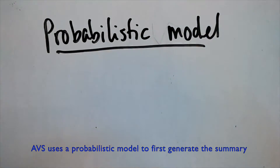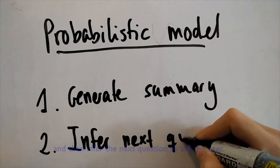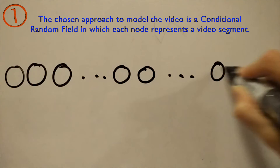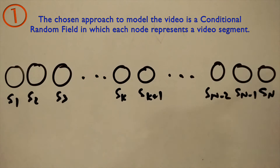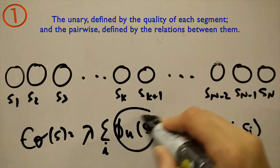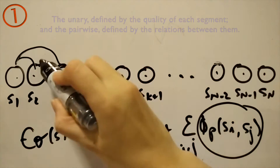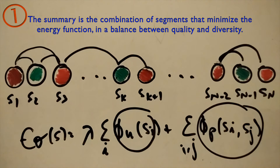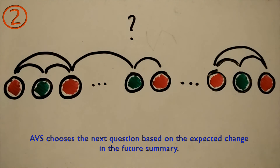ABS uses a probabilistic model to first generate the summary and then infer the next question to ask the user. The chosen approach to model the video is a conditional random field (CRF) in which each node represents a video segment. The energy function of the CRF contains two potentials: the unary, defined by the quality of each segment, and the pairwise, defined by relations between them. The summary is the combination of segments that minimizes the energy function in a balance between quality and diversity. To obtain the user preferences and update the summary, ABS chooses the next question based on the expected change in the future summary.